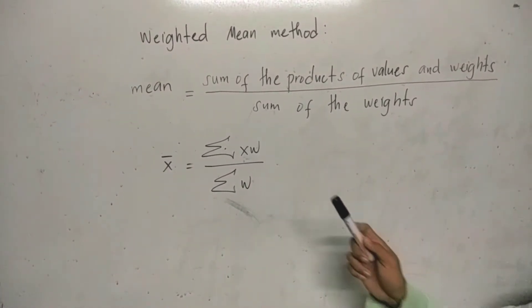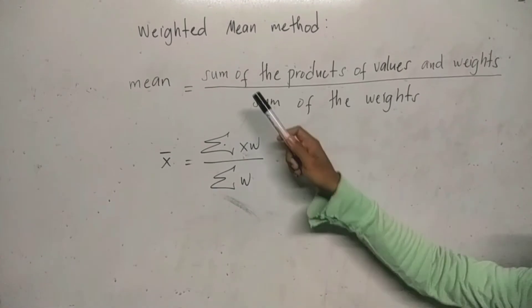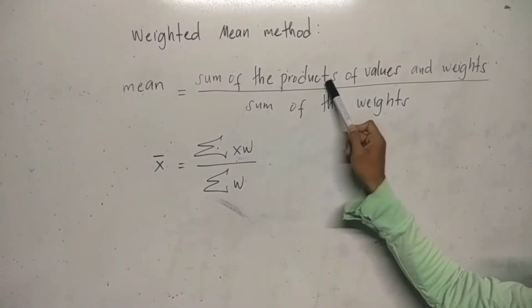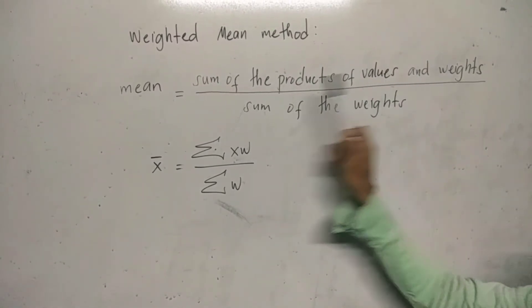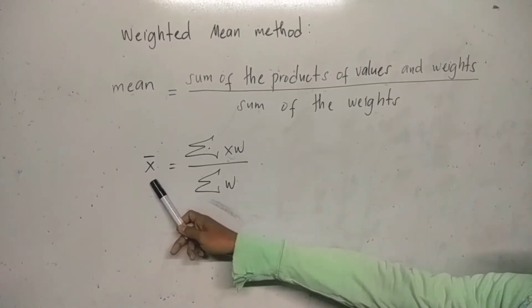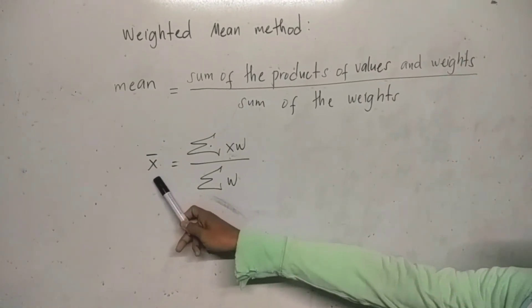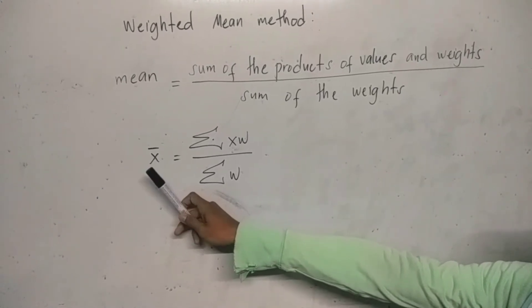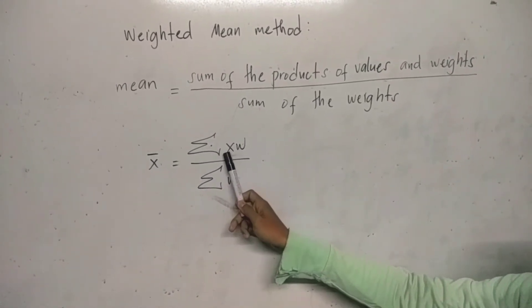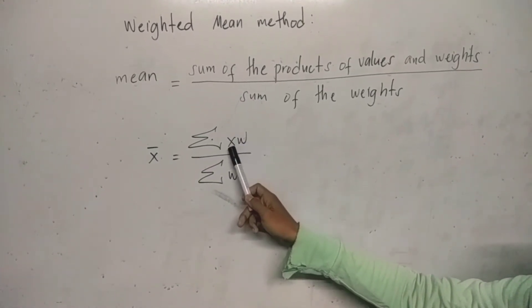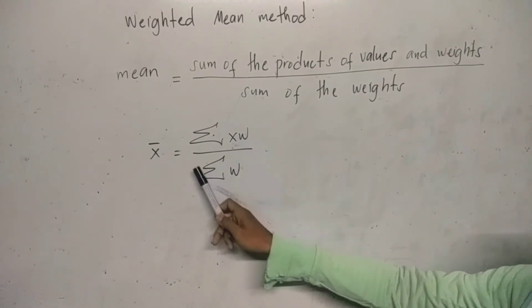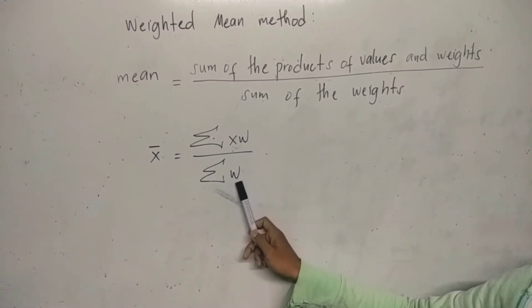The formula of the weighted mean is this one. Mean is equal to the sum of the products of the values and weights all over sum of the weights. Or in symbol, x bar or the mean is equal to summation of xw, the product of x and w, all over summation of w.